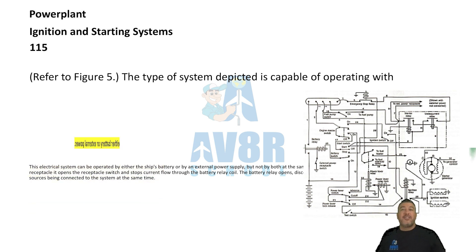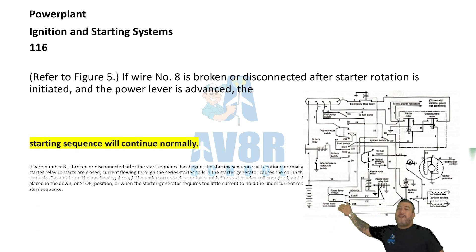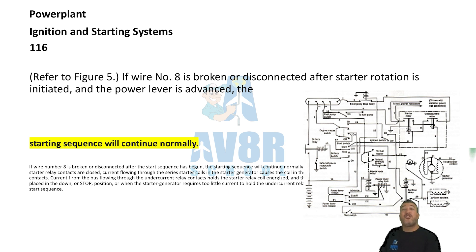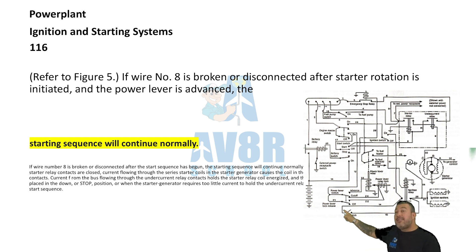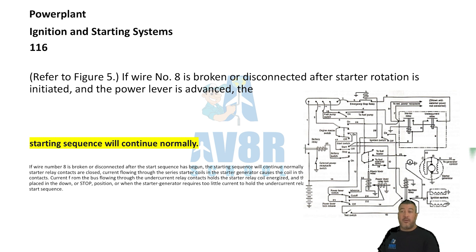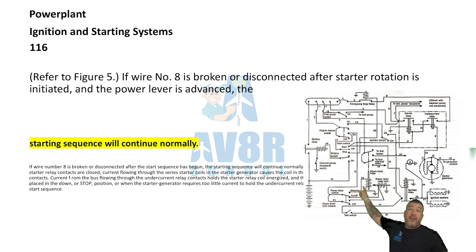Number 116. Referring to figure 5, if wire number 8 is broken or disconnected after starter rotation is initiated and the power level is advanced, the starting sequence will continue as normal. A break in wire number 8 does not interrupt the starting sequence.